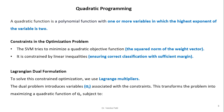A quadratic function is a polynomial function with one or more variables in which the highest exponent of the variable is 2. SVM tries to minimize a quadratic objective function — the squared norm of the weight vector — constrained by linear inequalities that ensure correct classification with sufficient margin. To solve this constrained optimization, we use Lagrange multipliers. The dual problem introduces a variable alpha associated with each constraint, transforming the problem into maximizing a quadratic function of alpha.